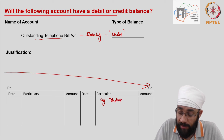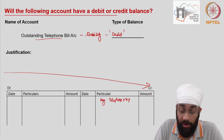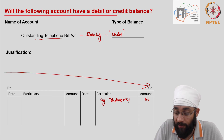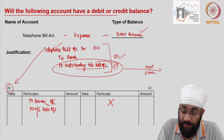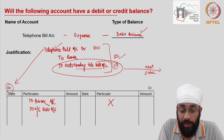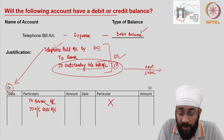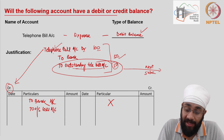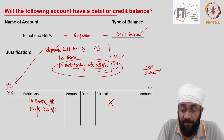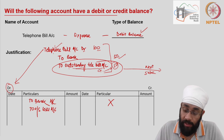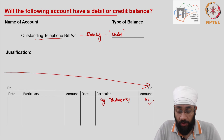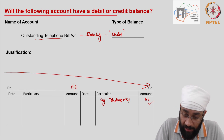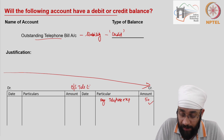How much was unpaid? Only 50. The remaining 50 was paid. So only 50 should appear in the outstanding telephone expenses account, even though the telephone bill account shows a debit of 100. The outstanding expenses account is credited with only 50 rupees — that is the outstanding telephone expenses account.